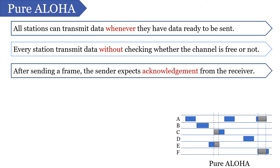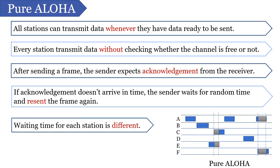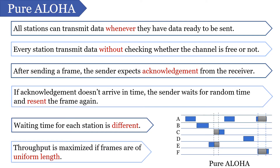If the data is successfully received at the destination, the receiving station sends an acknowledgement. If the transmitting station doesn't get an acknowledgement in time, it waits for a random amount of time and resends the frame that was discarded. The waiting time of each station is different — this approach prevents collision. However, the throughput can be maximized by keeping all the frames of uniform length.